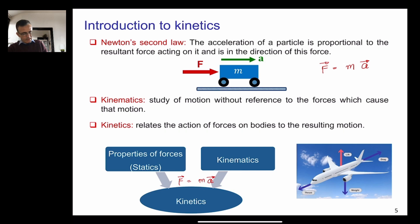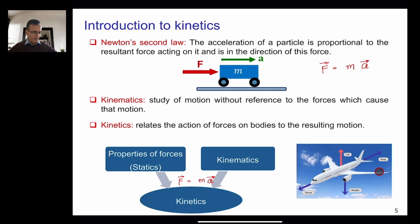F comes from statics, and A comes from kinematics. Newton's second law combines both forces and acceleration to make kinetics. A simple example: consider an aircraft with different forces — thrust, drag, lift, and weight. Using kinetics, you can calculate the acceleration of the aircraft, and also its velocity and displacement using Newton's second law.